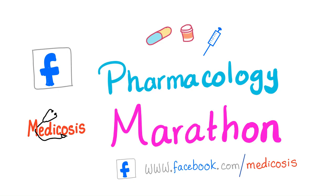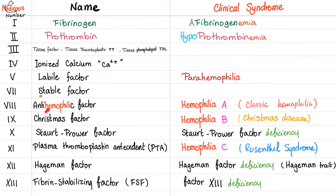Mediocre students do not study in July and August, but not you guys — you're killing it. A problem with factor 8 is called hemophilia A, or classic hemophilia. Problem with factor 9 is hemophilia B, or Christmas disease. Problem with factor 11 is hemophilia C, or Rosenthal syndrome.